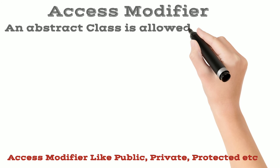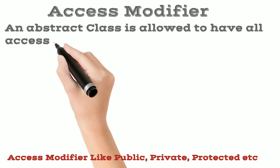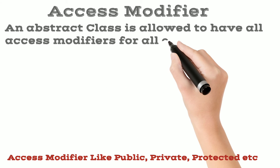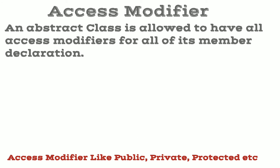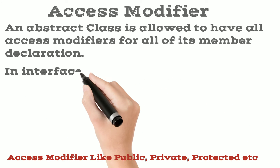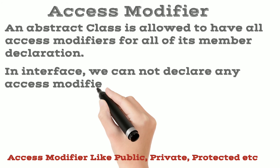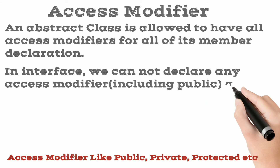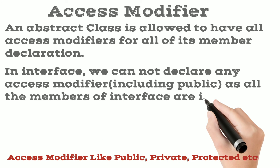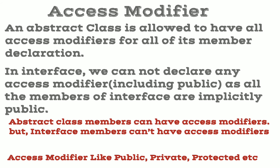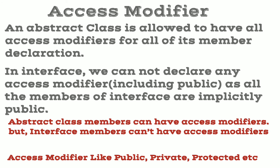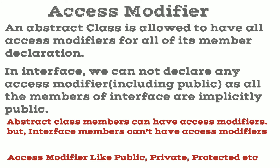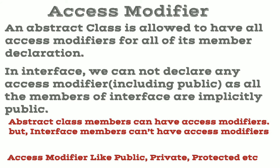An abstract class is allowed to have all access modifiers for all of its member declarations. While in an interface we cannot declare any access modifier, including public, as all the members of an interface are implicitly public. In other words, abstract class members can have access modifiers, but interface members can't.